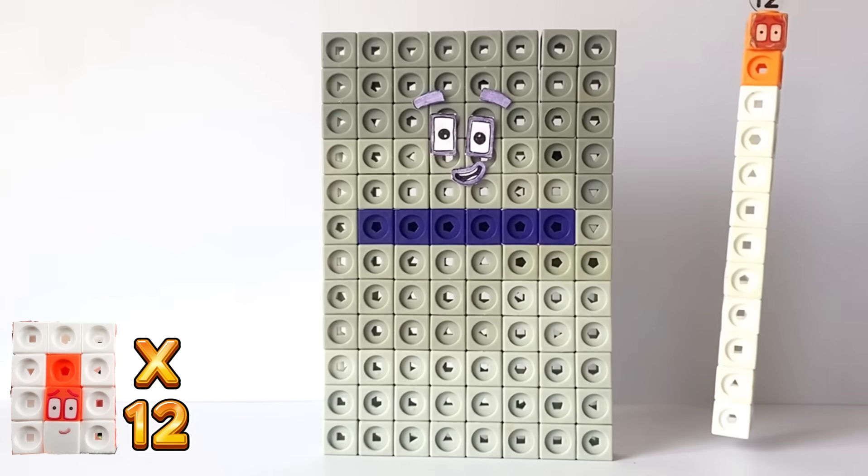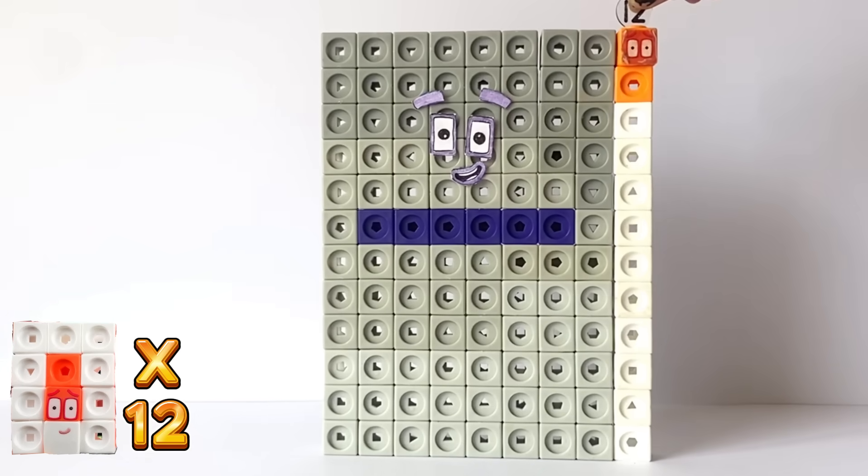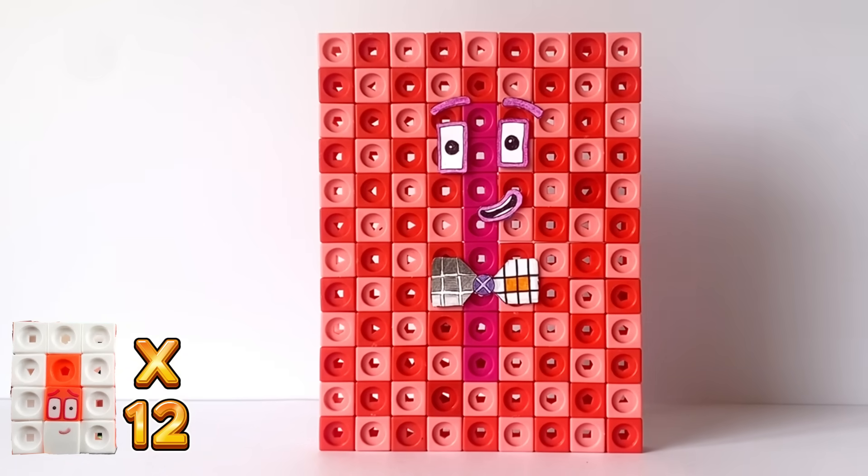So next we have 9 times 12 equals 108. NumberBlock 108 has pink face features like 8 and has rectangle eyes as they can also make lots of rectangles. NumberBlock 108 also has a bow tie with a 9 pattern on one side and a 12 on the other, because 12 lots of 9 are 108.